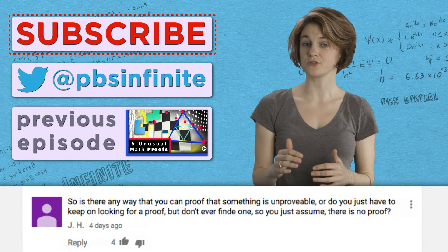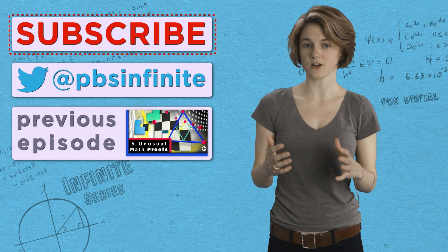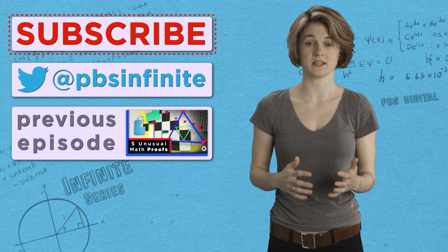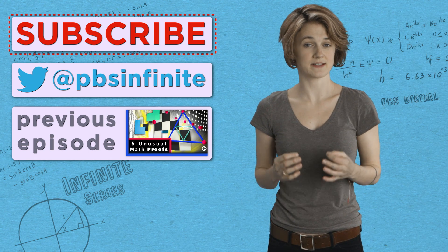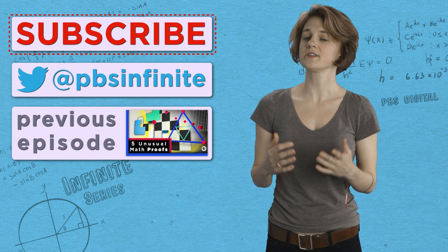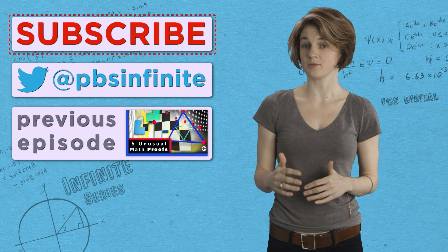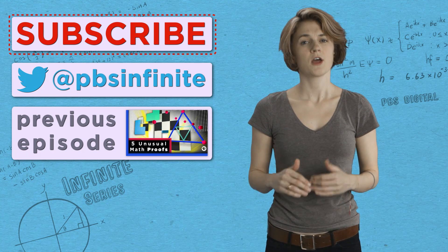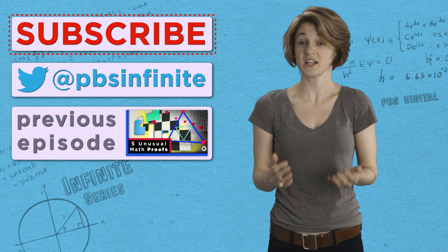JH asked if you can prove that something is unprovable. Although that sounds like a contradiction, basically, yes, you can prove that something is neither provable nor disprovable within a given axiom system. It's called independent. In the episode Hierarchy of Infinities, we discussed the continuum hypothesis, which is independent of ZFC. The proof that it's independent is tricky, really tricky, but it exists.